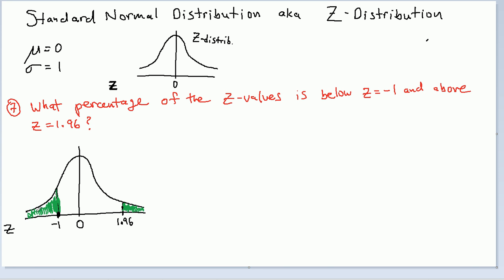So I want these two areas, and I want one number in the end. I want the percentage of data represented by these shaded regions. If you watched question 6, we did the opposite — we got in between these two numbers. So now I want to do outside.